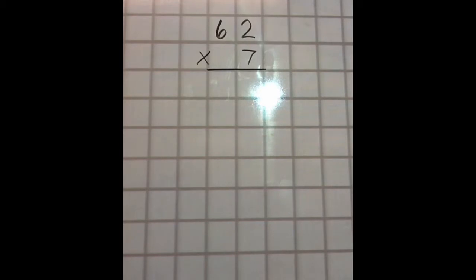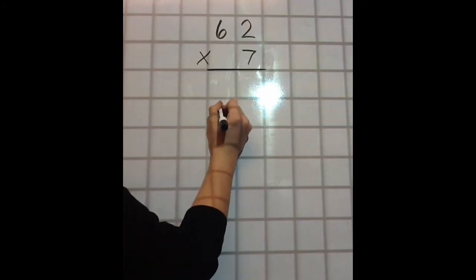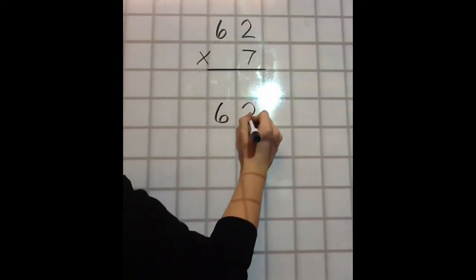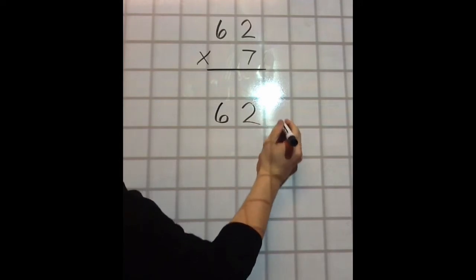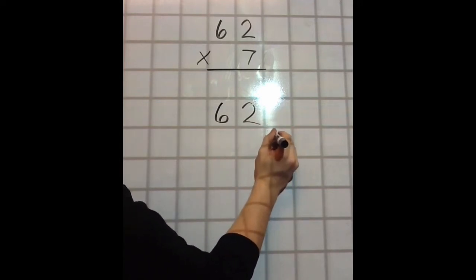Alright, so, 62 times 7 is the problem that we've been working on this whole time. But when it's written like this, it doesn't really work well for our lattice. So, the first thing that I'm going to have to do is rewrite it in a way that will help us set our lattice up. So, the first thing's first, I'll write the top number here, 62. I'll go over 1 and down 1 for the second number. So, 62 times 7.